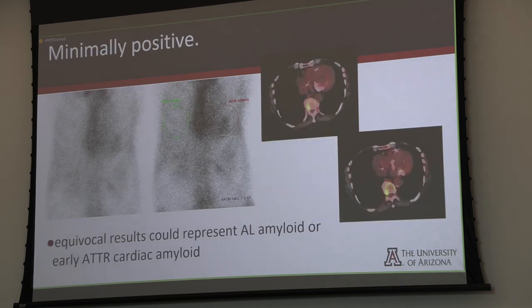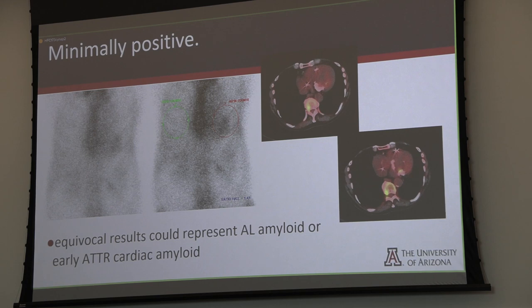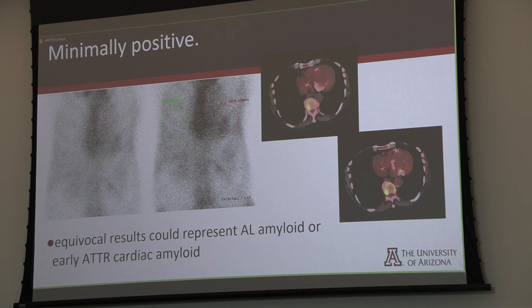Another interesting case — minimally positive — shows grade 2 uptake that you cannot argue with, but the H/CL ratio is only 1.4, not reaching the 1.5 threshold. Is this one of the false negatives? Maybe. Looking further, the upper cross-section shows uptake predominantly in the blood pool, but other cross-sections show some uptake in the lateral wall at the basal aspect. According to semi-quantitation grading, this is highly suggestive; according to quantitation, it is borderline. The SPECT-CT doesn't show much uptake where expected, so this case must go through further workup at the referring physician's discretion.